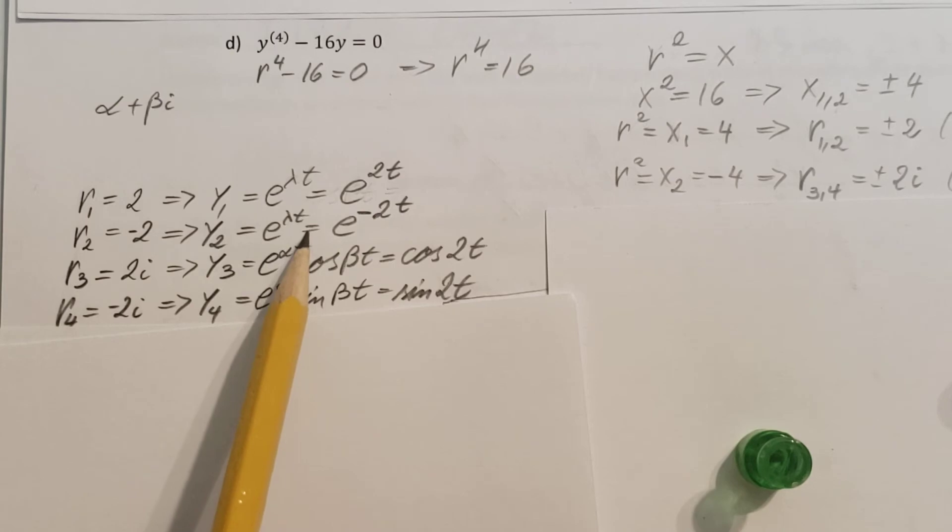Real part is 0. So, this e to the whatever, to the 0, becomes 1. Cosine beta, where my beta will be 2. So that's it. Cosine 2t.